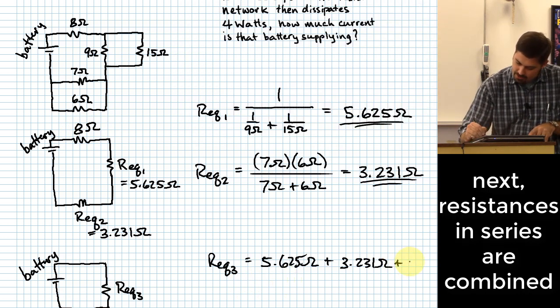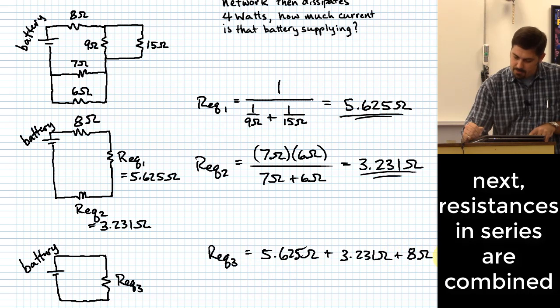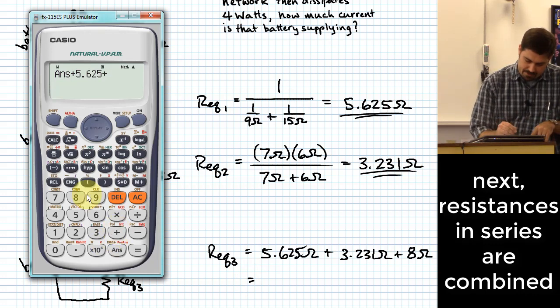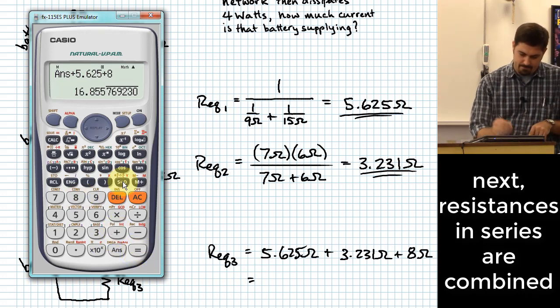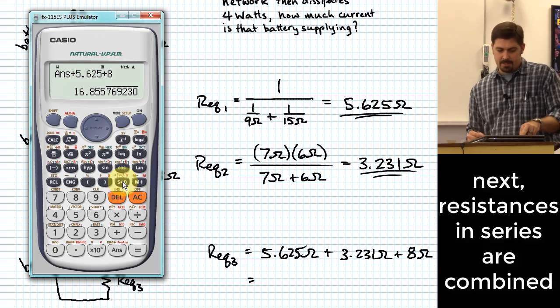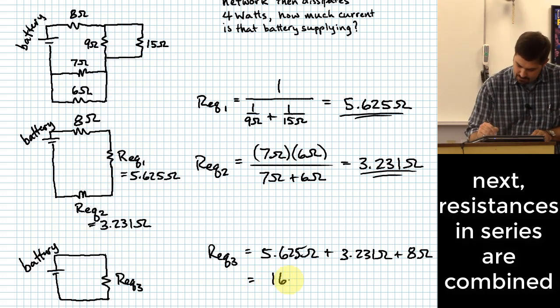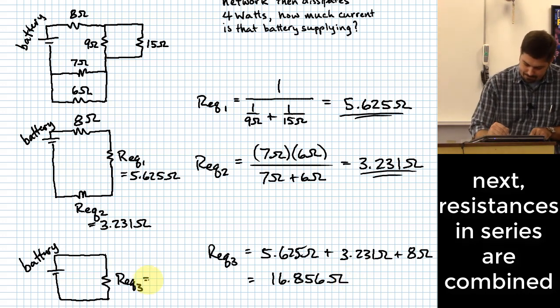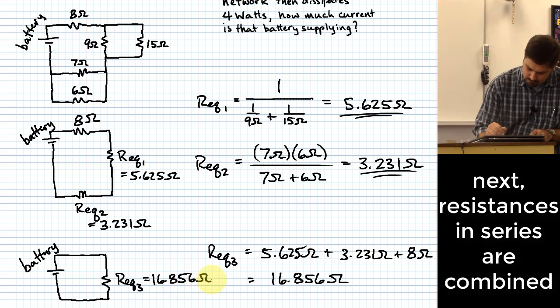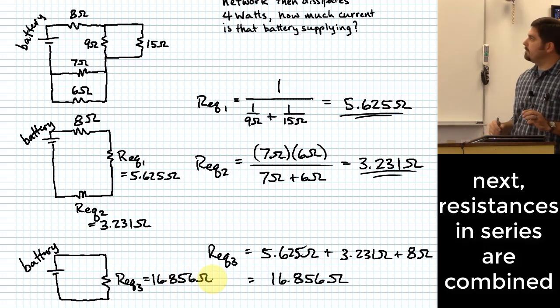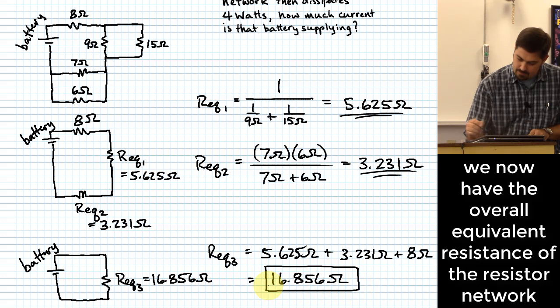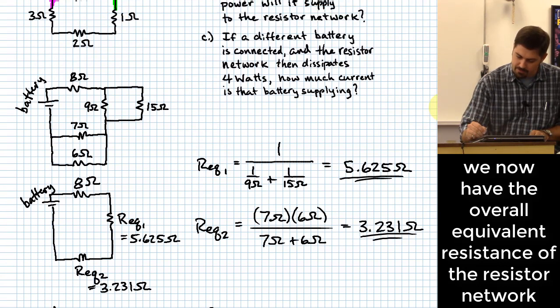So what do we need to do? So I have to add on another eight ohms, keeping you guys on your toes. All right, so what do we do there? Plus eight. That gives me 16.856 ohms. And now what? Well, that actually answers part A, doesn't it? That is the answer to part A, 16.856 ohms.